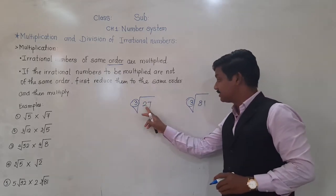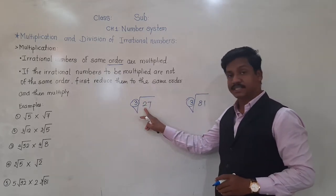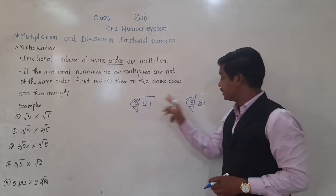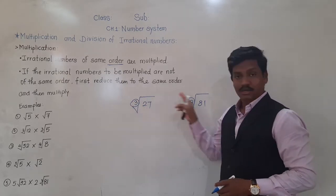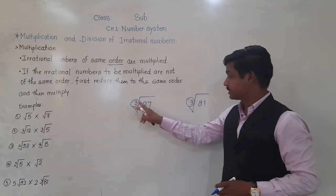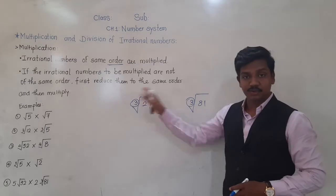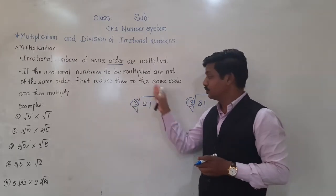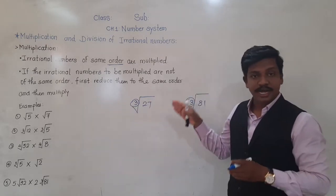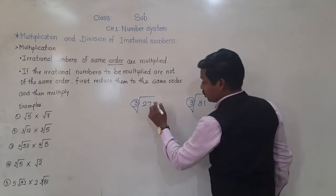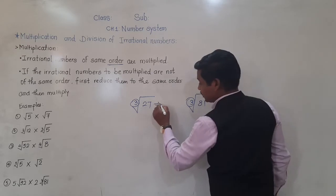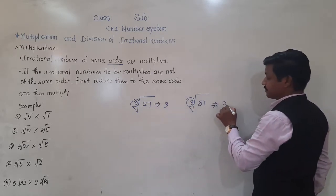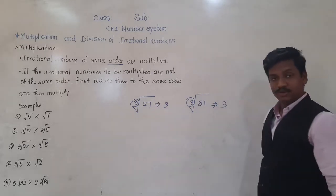The number inside the cube root is called a positive integer. This number 3 — here also 3 — that means it is cube root, so order of this irrational number is 3. Order of this irrational number is 3.